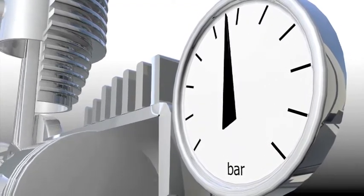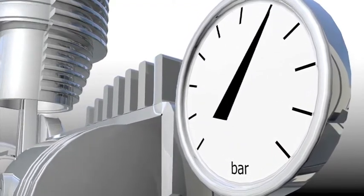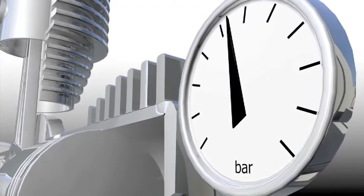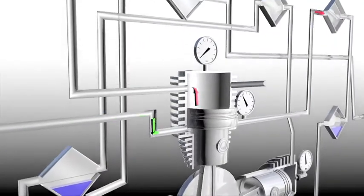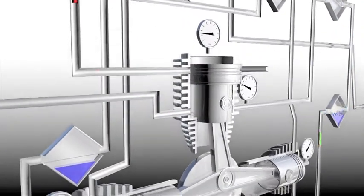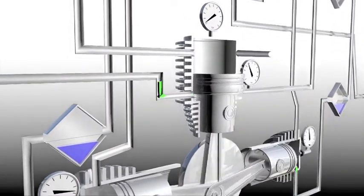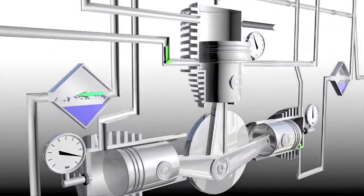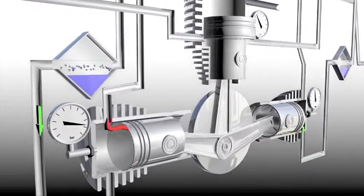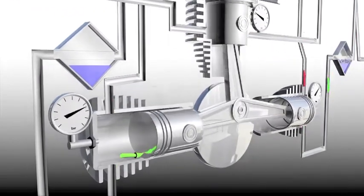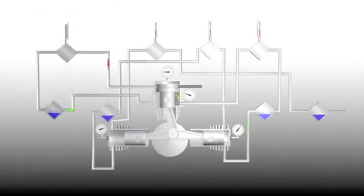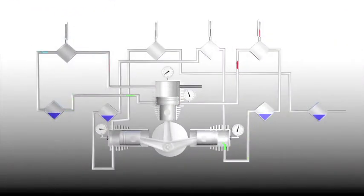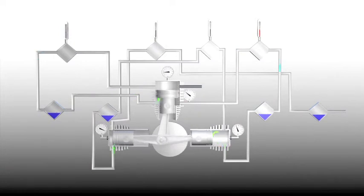Having undergone the first, second and third stages — first intercooler, second intercooler, third intercooler — and the separation of the moisture associated with each of those stages of compression, we come to the fourth stage, after which an operational pressure of 350 bars gauge is attained.